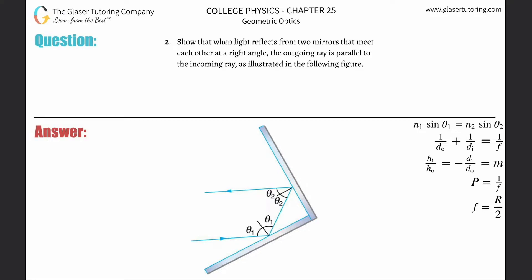Number two: show that when light reflects from two mirrors that meet each other at a right angle, the outgoing ray is parallel to the incoming ray. Here is the incoming ray, here is the outgoing ray, and what we're trying to prove is that these two are parallel to one another when these two mirrors meet at a 90-degree angle. That's our goal.